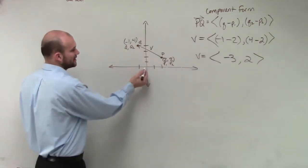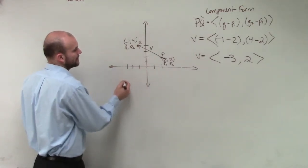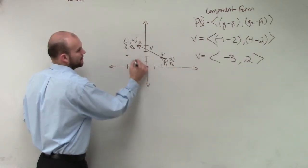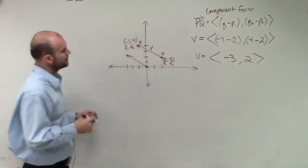So therefore, I go over negative 3, 1, 2, 3, up 2. Remember, we always have our initial point here. Go from there. OK?